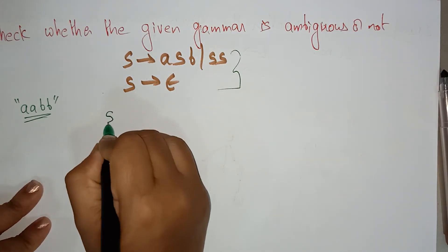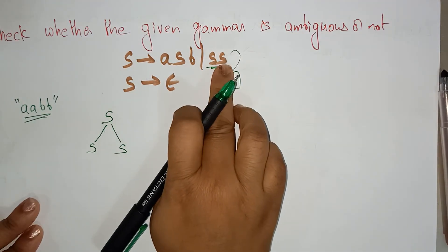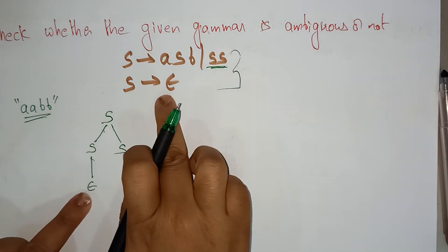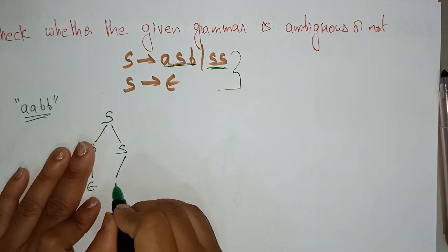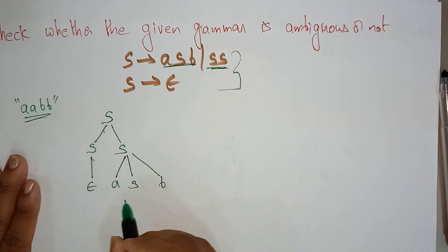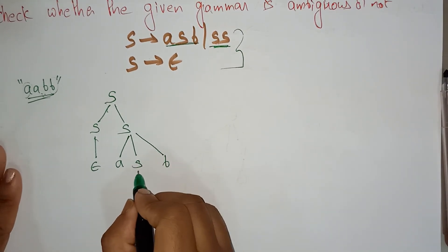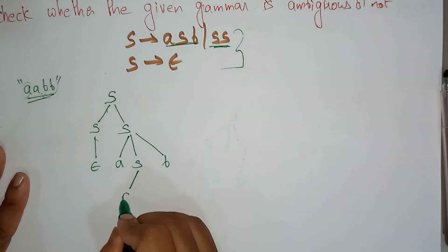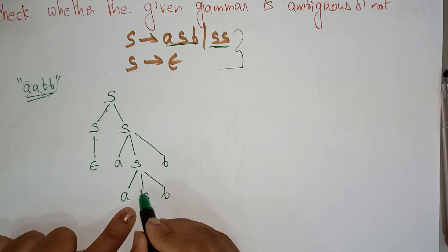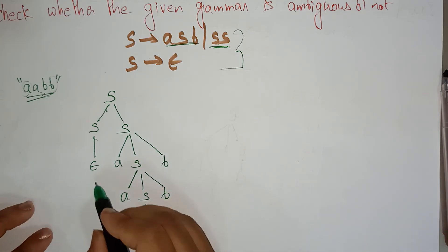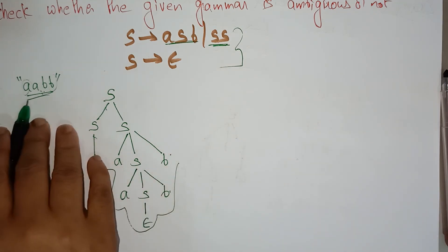For the string A A B B, the above grammar can generate two parse trees. Starting with the start symbol S, I am replacing S with S S. Then S is replaced with S S again. This S I can replace with epsilon — epsilon means empty, so nothing is there, just forget it. This S I am replacing with the first production A S B. I got A and B. Still another A B I need to get. Again substituting this S with A S B, giving A A S B B. These are all terminals. The only non-terminal remaining is S. This S I am replacing with epsilon. So the string I get is A A B B.